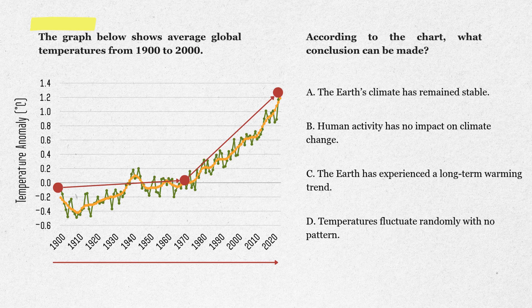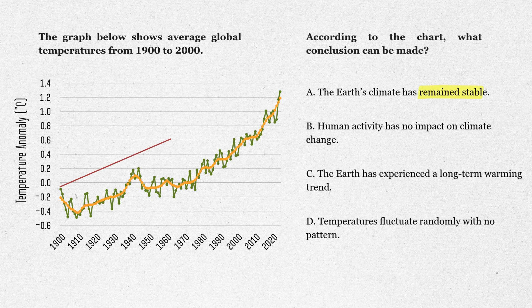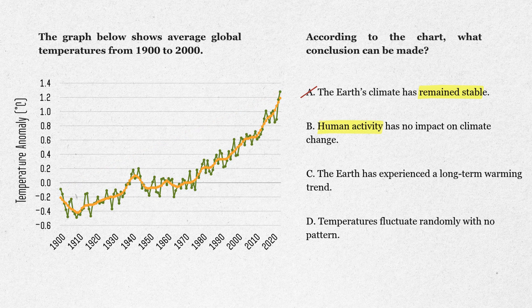Now let's test the answer choices. Option A: the Earth's climate has remained stable. That doesn't fit — the line is clearly going up, not staying flat. Cross that out. Option B: human activity has no impact on climate change. Careful here — the graph only shows temperature changes and doesn't say anything about causes like human activity. This answer goes beyond the data. Eliminate it.